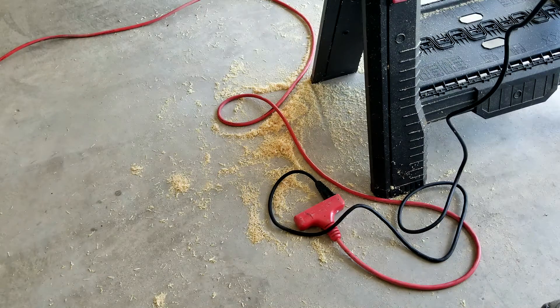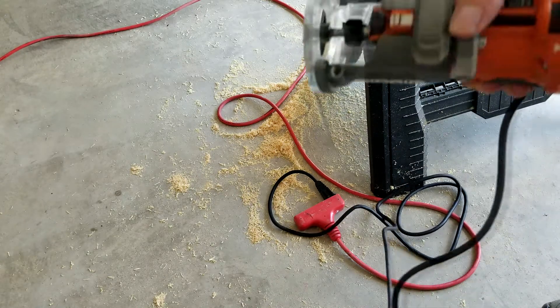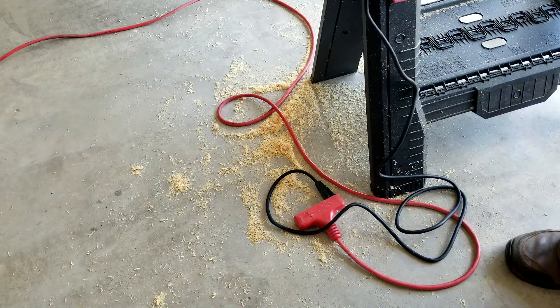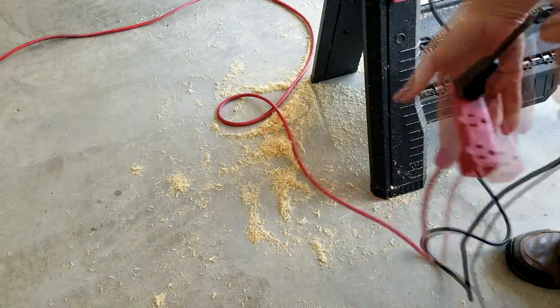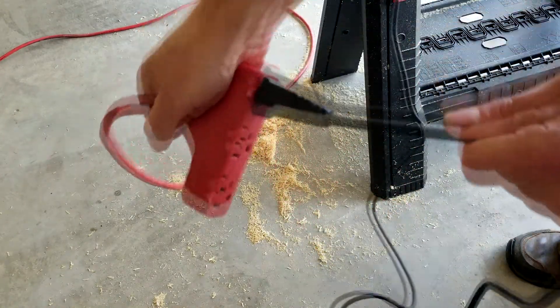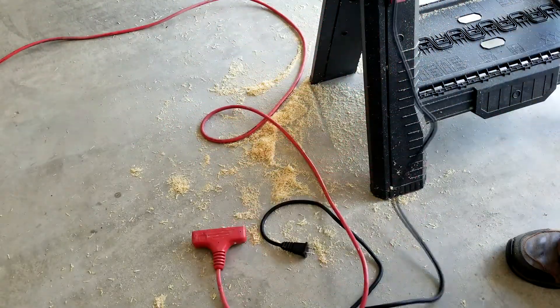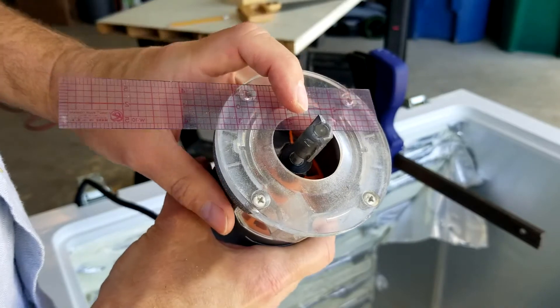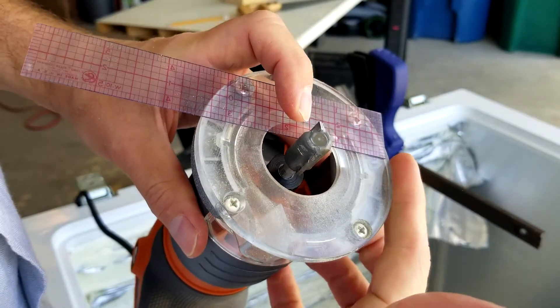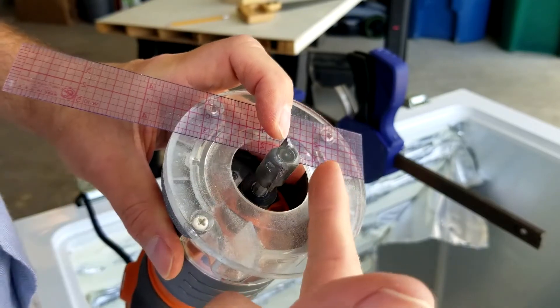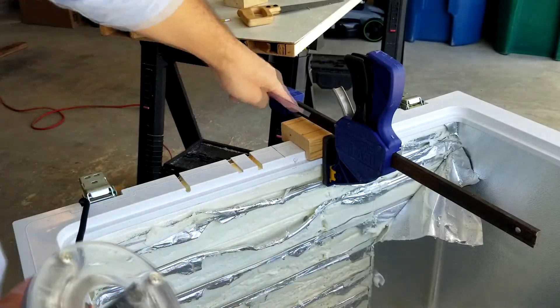One very important reminder: before you adjust the router bit, always make sure to unplug it from the power so you keep your fingers safe and intact. One thing to do before you begin is you need to figure out the distance from the base of the router to the outside edge of the blade depending upon where you're going to put your jig.